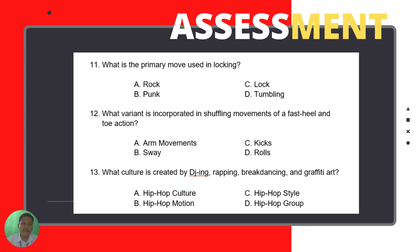Number twelve: What variant is incorporated in the shuffling movement of a fast heel and toe action? Is it A — arm movements; B — sway; C — kicks; or D — rolls?